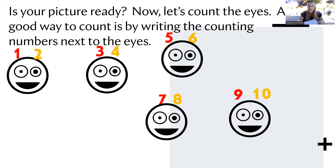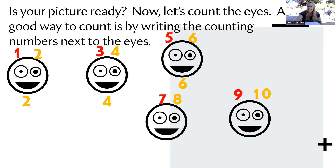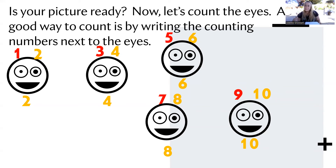Can you think of another way to count the eyes? By twos? I love it! Let's count by twos. Ready? Two, four, six, eight, ten. That's it — ten eyes! That was really cool. We came up with two different ways to count to ten. I love it.